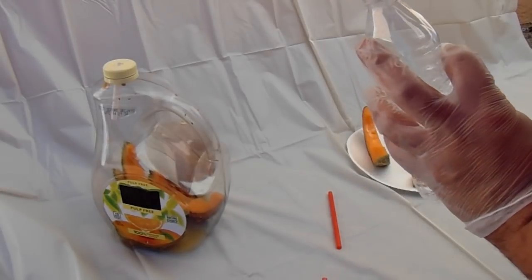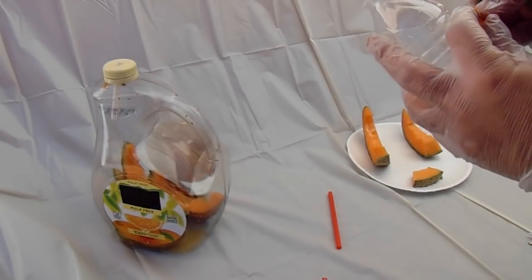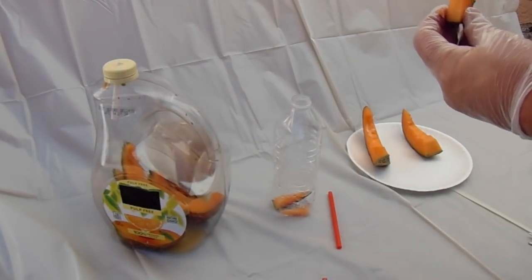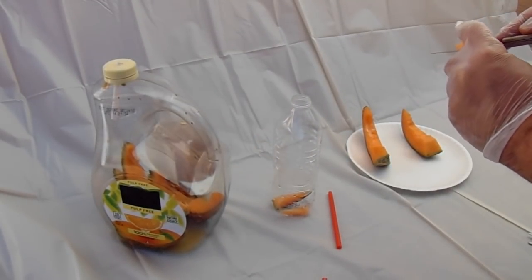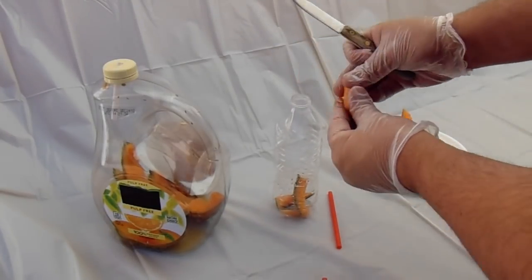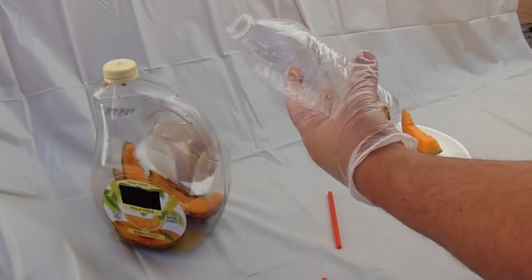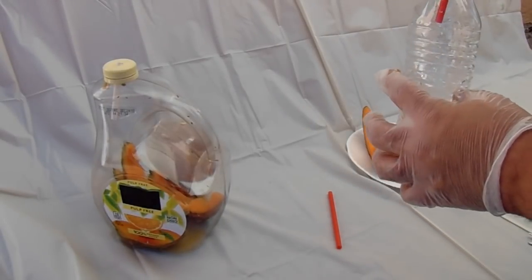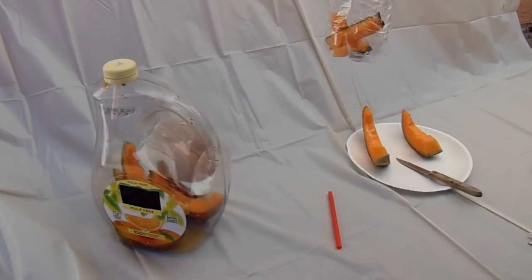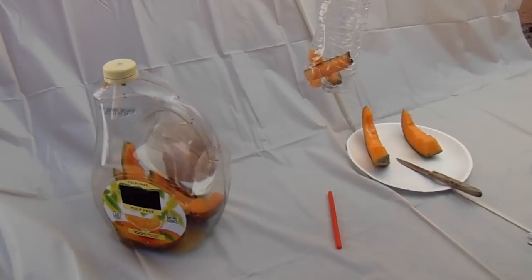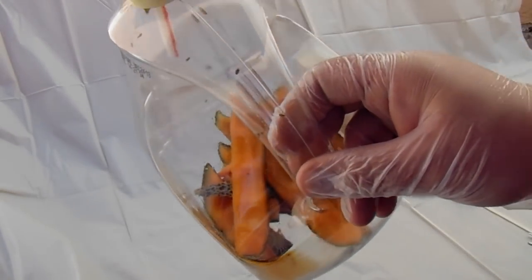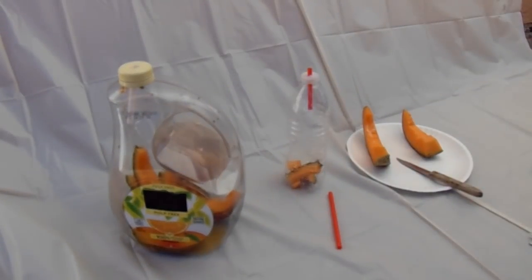Just stick the fruit into the water bottle, add a couple little tiny slices, and you've got a quick and easy fly trap for fruit flies in less than one minute. Works effectively, as you can see, real easy and real good.